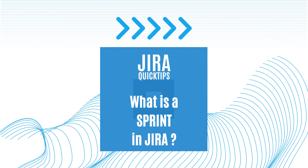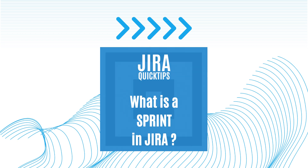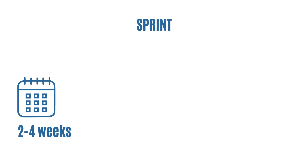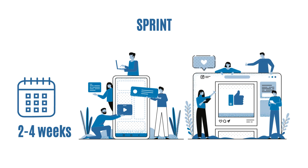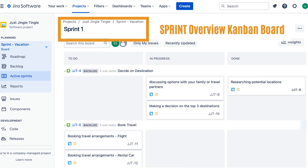Welcome to this quick tutorial about sprints in Jira. If you are new to software development, you may have heard the term sprint and wondered what it means. In Jira, a sprint is a short period of time, usually one to four weeks, where a team of developers works on a set of tasks or user stories to deliver a working increment of software. Think of it as a mini project with a specific goal that the team aims to achieve within the given timeframe.